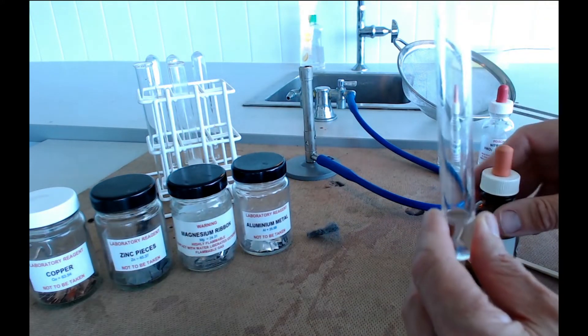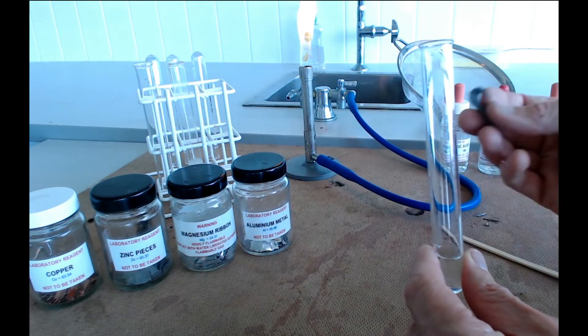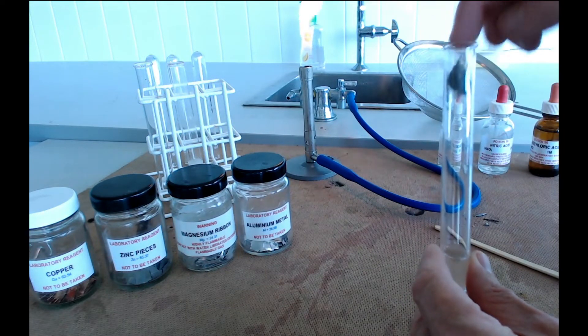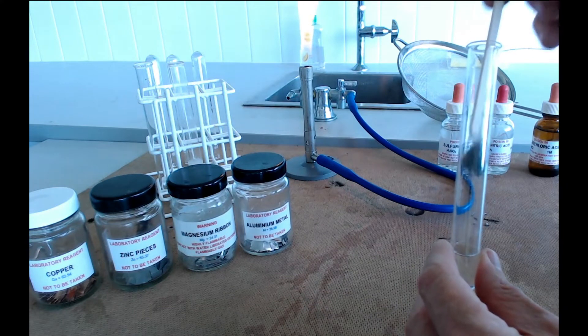Now, having got your acid in there you're now going to pop your metal inside it. So I'm going to start with my iron. And the iron wool might need some persuasion to get down to the bottom of the tube. But you just poke it down there. Make sure it's submerged in the acid.